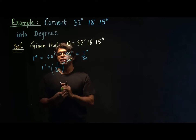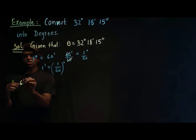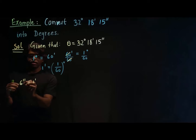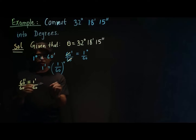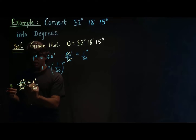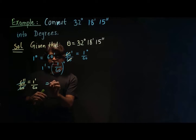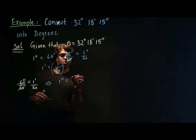In the same way, we know that 60 seconds are equal to one minute. So I'm going to divide both sides by 60, which cancels out the 60, and what I have left is one second is equal to one over 60 minutes.